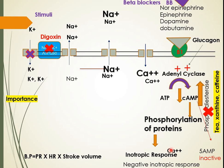There is an enzyme called phosphodiesterase that degrades cyclic AMP into 5-AMP, an inactive metabolite. If we inhibit this phosphodiesterase enzyme, the level of cyclic AMP rises. Once cyclic AMP levels are raised, this leads to increased protein phosphorylation and positive inotropic responses.